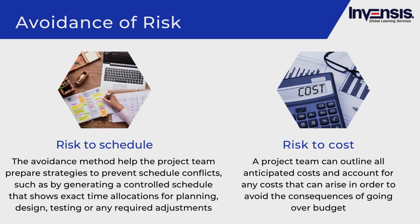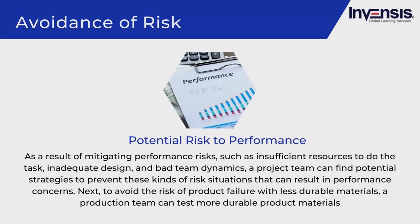Avoidance of cost risk means outlining all anticipated costs and accounting for any costs that can arise to avoid going over budget. For performance risk, by mitigating risks such as insufficient resources, preliminary design issues, and bad team dynamics, a project team can find strategies to prevent performance concerns. For example, testing more durable product materials can avoid product failure, and interactive team management can be employed to prevent team difficulties.